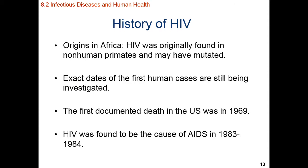One disease that we're currently suffering from a pandemic from is human immunodeficiency virus, or HIV. HIV is believed to have originally formed in primates, and this disease is believed to have mutated sometime in the late 1950s, early 1960s, and then spread to human populations in rural Africa. There's a lot of analysis looking at the rate of molecular change within the virus — the molecular clock — to determine when the mutation occurred that allowed it to infect human beings. The first confirmed documented case of HIV-AIDS in the United States was in 1969, and as recently as 1983–1984, HIV was found to be the cause of AIDS.